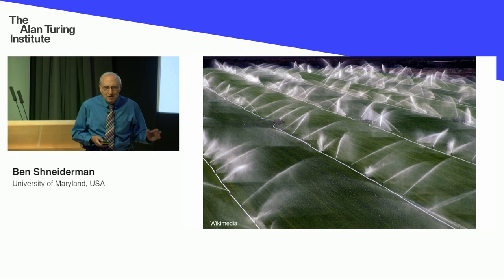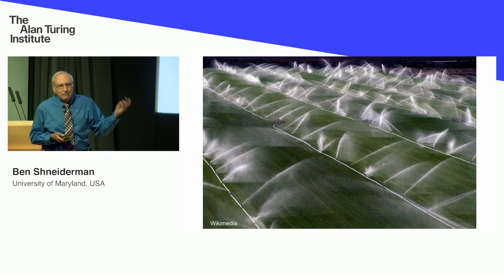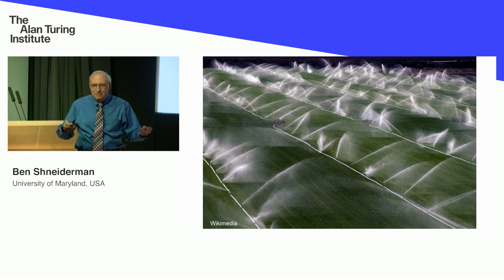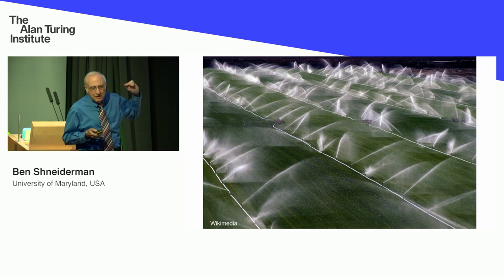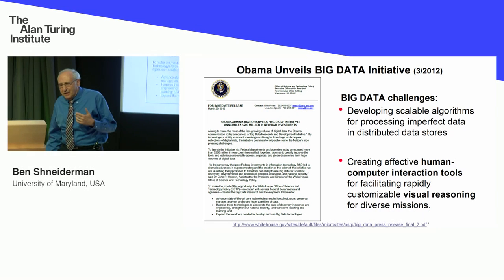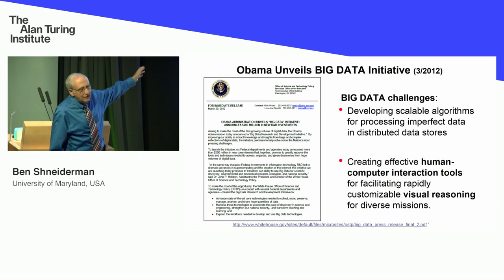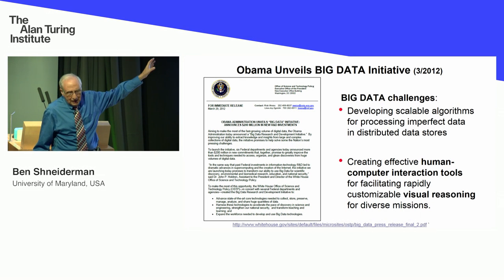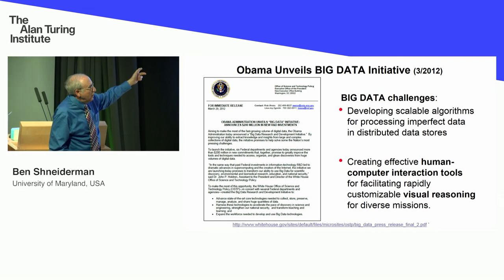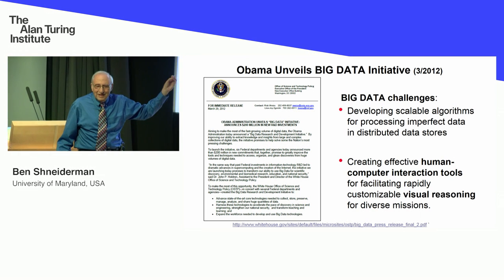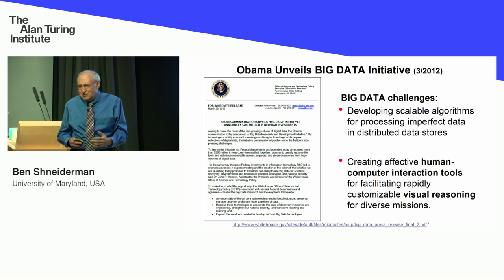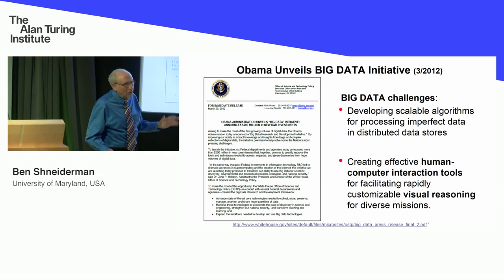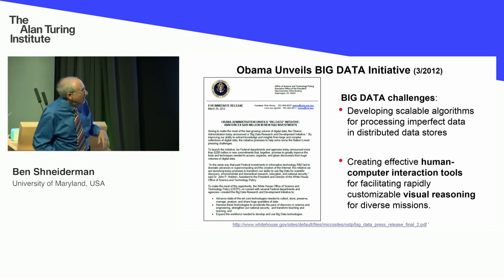I want to see powerful technologies put to work to promote positive outcomes for people. We have serious problems in our time: healthcare delivery, energy sustainability, environmental protection, community safety, cyber security. All those things are really important, and we need much more effective ways of dealing with big data. The White House's initiative on big data closes with two powerful challenges: developing scalable algorithms for processing imperfect data in distributed data stores, and creating effective human-computer interaction tools for facilitating rapidly customizable visual reasoning for diverse missions.